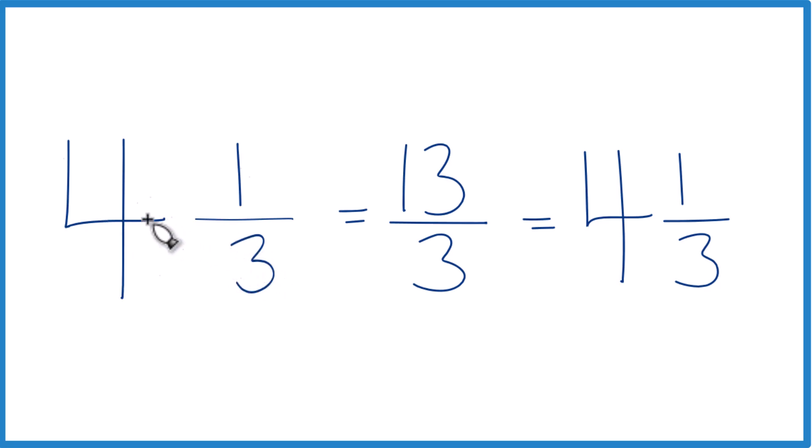This is Dr. B writing the mixed number 4 and 1 third as an improper fraction. The answer, 13 thirds. Thanks for watching.